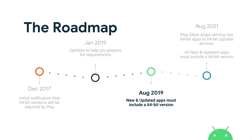If the app is managed code — Java or Kotlin — nothing to do. Everything works. If you have any native code, if you have 32-bit code, you need to also have 64-bit code.